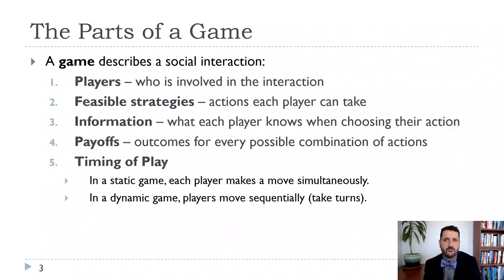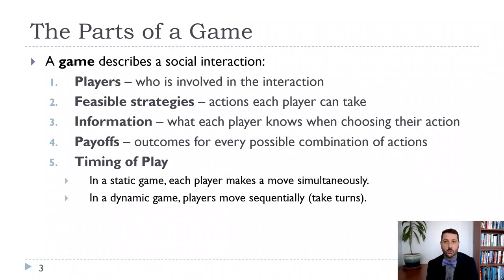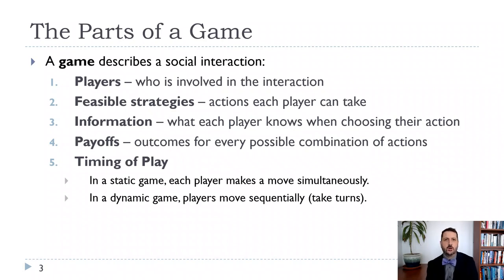We're going to start with a simple simultaneous game. Whenever we talk about a type of game, we want to think about: who are the players? We'll usually focus on two-player games, though for things like Cournot oligopoly we can solve for any number of players. Feasible strategies — what can they do? In rock, paper, scissors your strategies are rock, paper, or scissors. In chess, the feasible strategies are much larger. In industrial organization, we're usually talking about pricing decisions and output decisions.